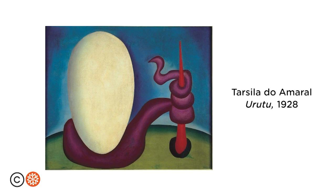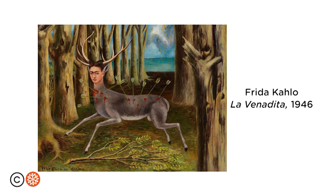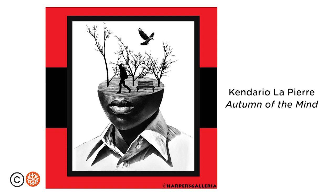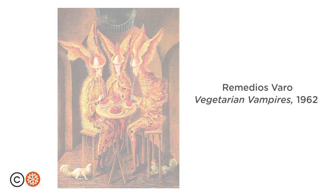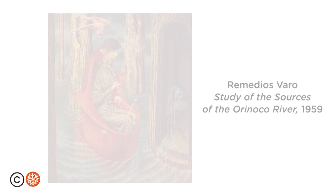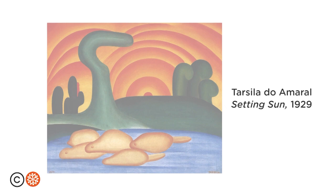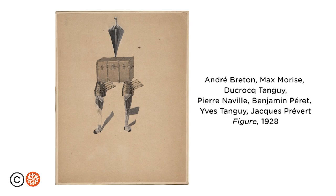They came up with all sorts of processes for helping them create art without using their awake minds, and a lot of them really liked to work together, collaborating on pieces. These surrealists came up with tricks and techniques and processes, and probably the most famous of these collaborative games is what we're going to learn today, and it's called the Exquisite Corpse.